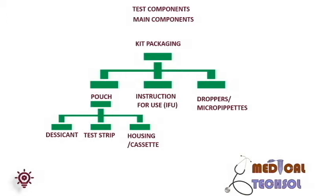Inside the housing or cassette, the test strip is inserted. The housing or cassette plays a vital role in the assay, and the design of the cassette is a critical parameter. Sometimes tests are provided with a lancet, swab, or test tube depending on the application and intended purpose.